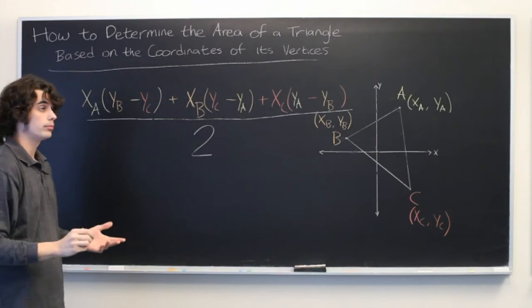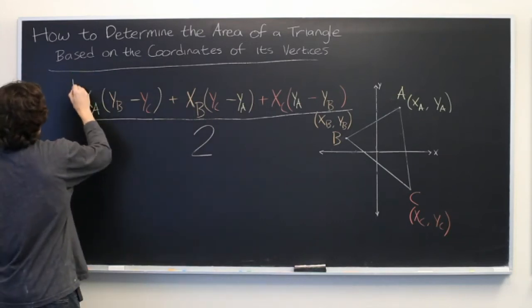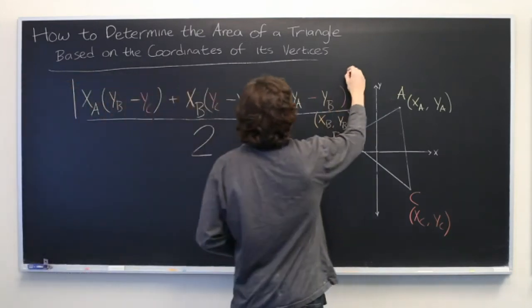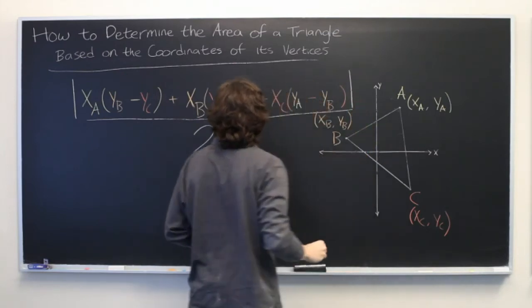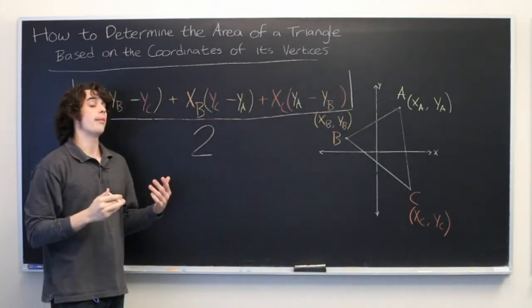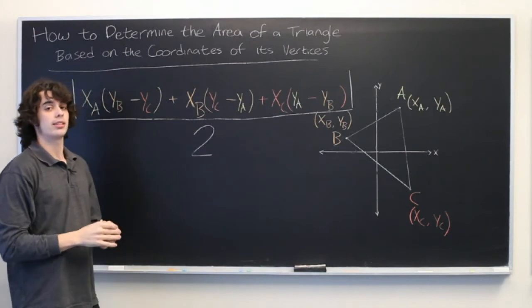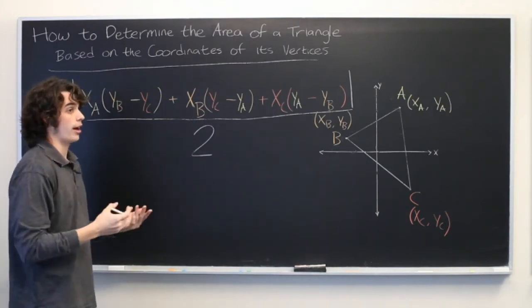And finally, we're going to take the absolute value of the top part in order to ensure that we do, in fact, get a positive area, since it doesn't really make any sense for a triangle to have negative area.